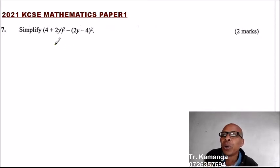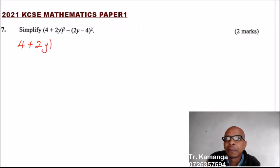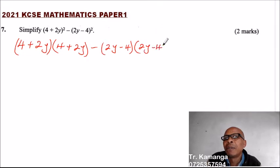So you are taught how to expand factors. So what you do here is (4 + 2y)(4 + 2y) minus (2y - 4)(2y - 4). Close the bracket. So that is the meaning of square there.